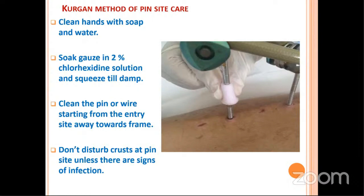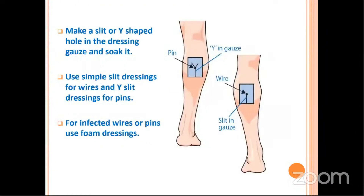If there is a crust, do not disturb it unless there are signs of infection. Dressings can be made by making a wire slit or simple slit in the gauze — for pins we use simple slits, for wires we use a wire slit as shown in the diagram. For infected pins or where there is oozing, we can use foam dressings.